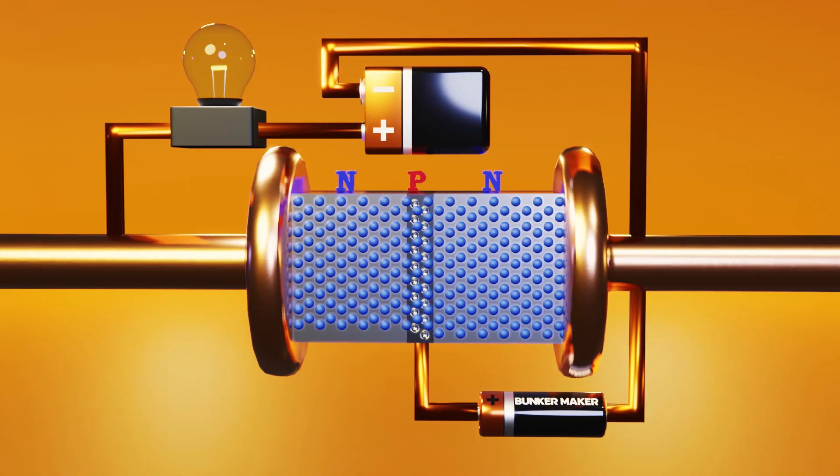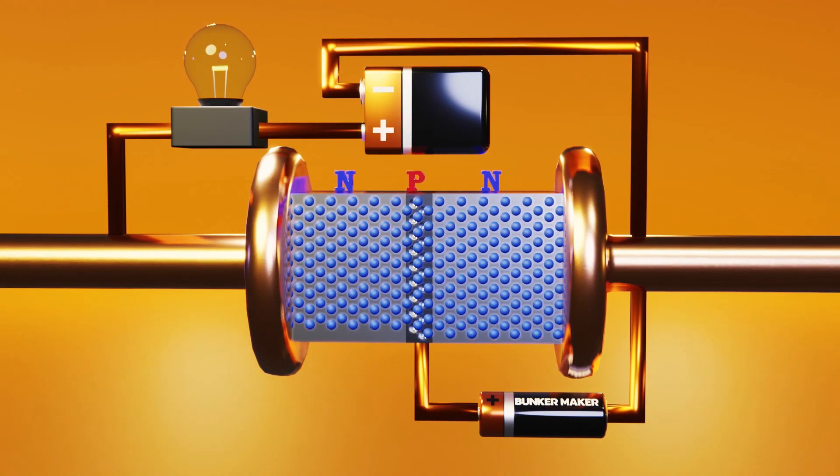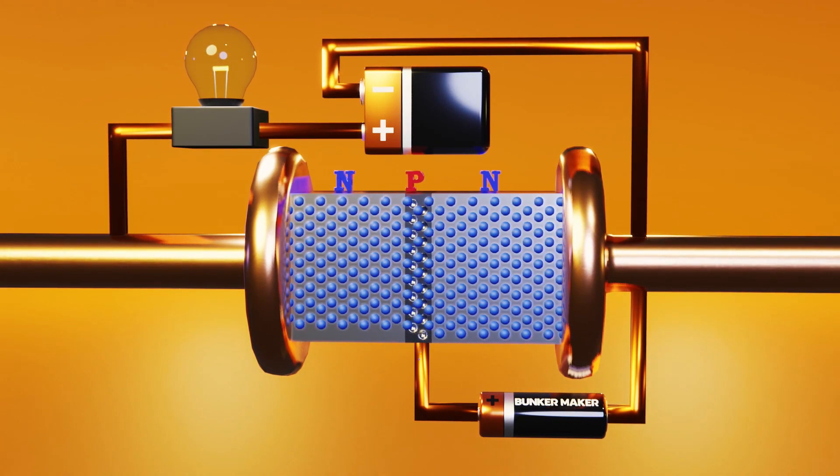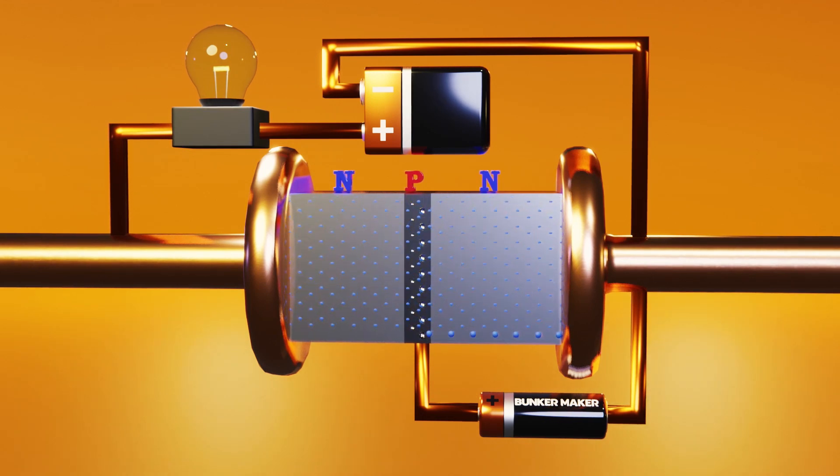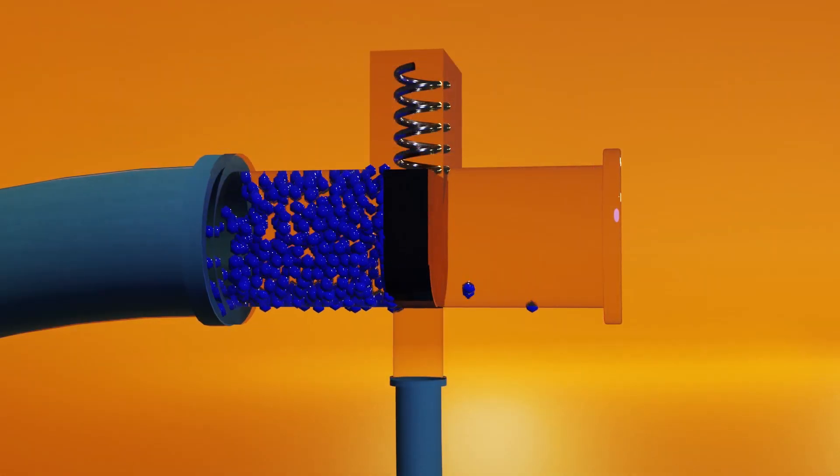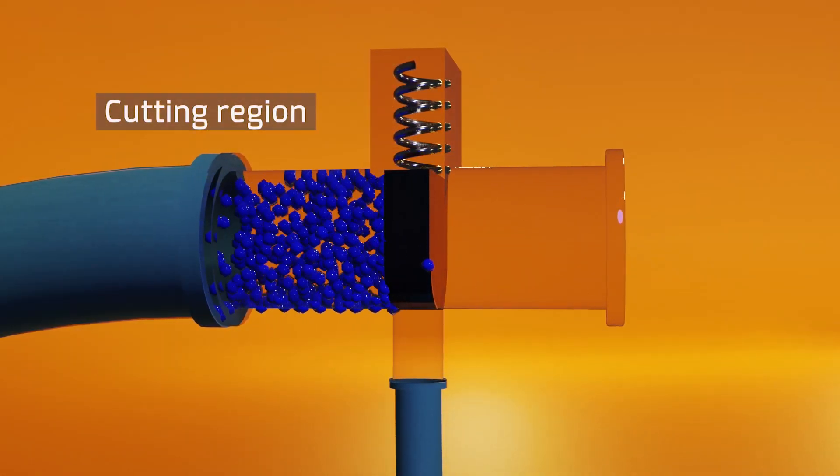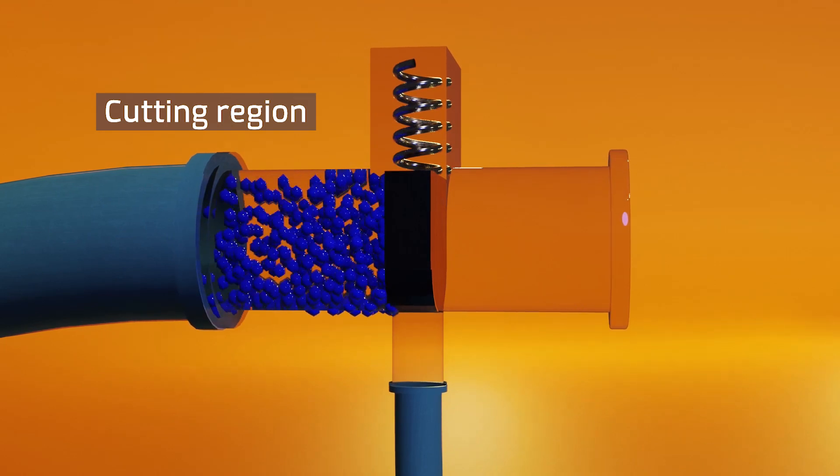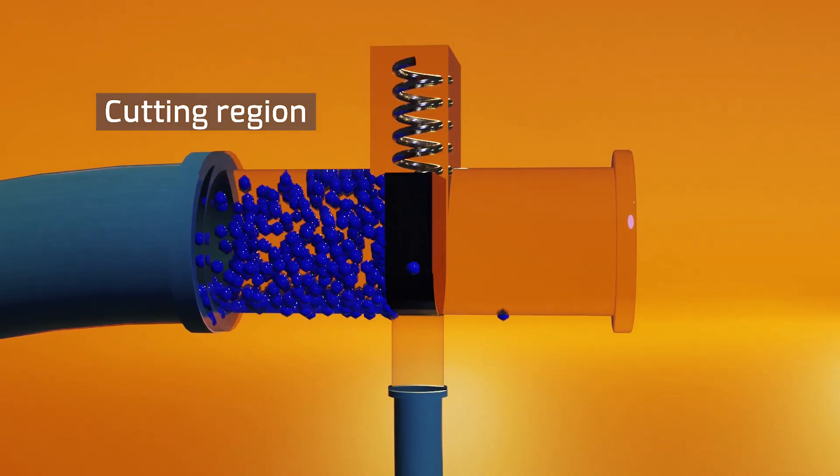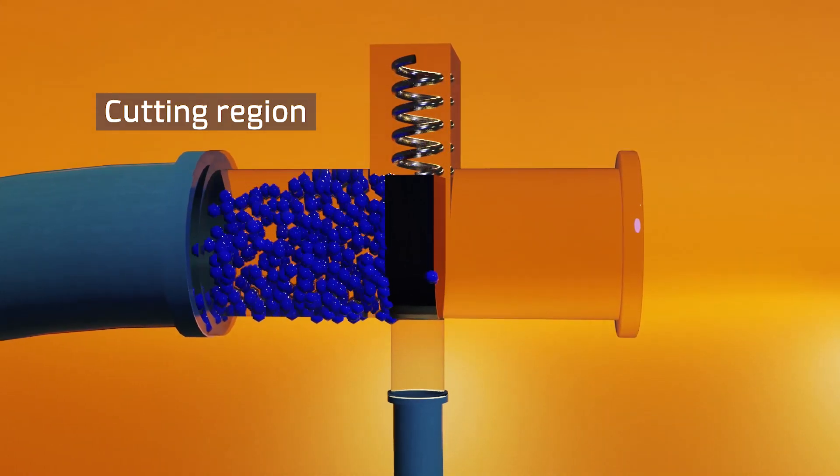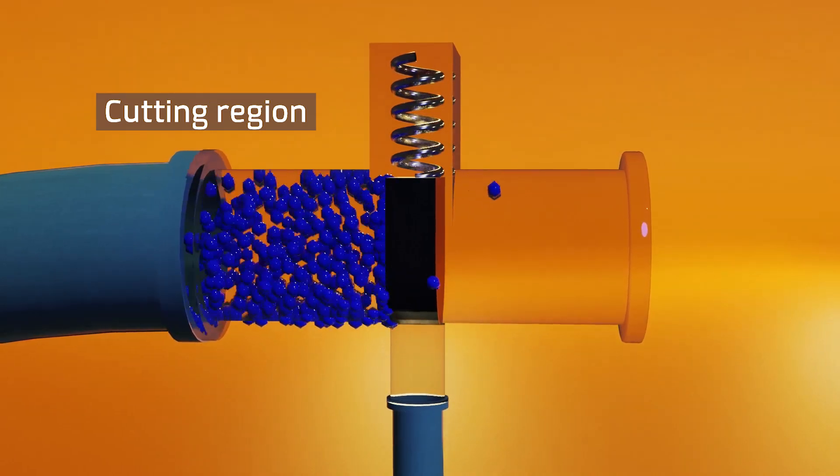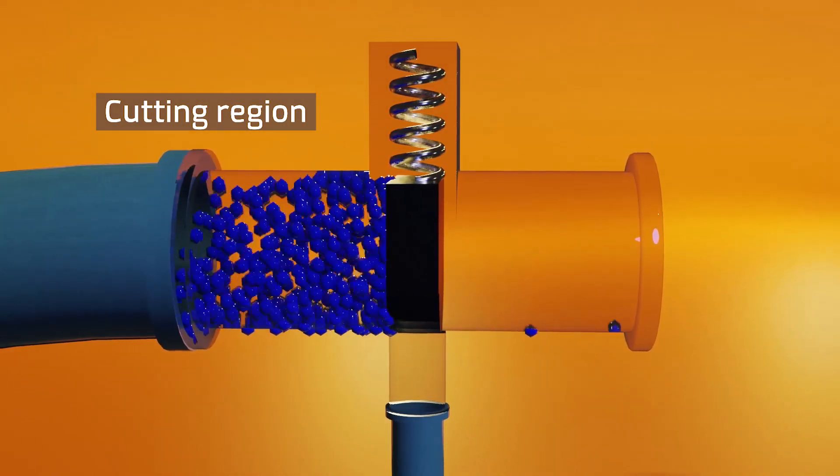Returning to our NPN bipolar junction transistor, depending on the voltages that are applied to its connectors, this will have four possible states or operational regions. And to understand them conceptually we will rely on our hydraulic model. In the first case, we will be in the cutting region where the base voltage will be lower than the other two connectors. Therefore, the reaction that will allow the passage of current between the collector and the emitter will not start, meaning that our valve will remain closed.